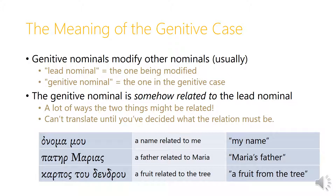So onamamu is a name somehow related to me — we might translate it my name, the name I possess. Pater Marias is a father somehow related to Maria — not a father she owns, but the father who is her parent, genetically related to her. Karpos tu dendru is a fruit somehow related to the tree — we might say a fruit from the tree. One approach is simply to leave the genitive as one broad category and infer from context what the relationship is.